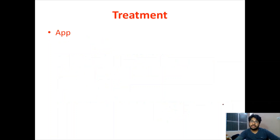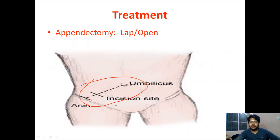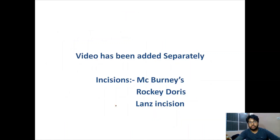Treatment is appendicectomy, which can be laparoscopic or open. The grid-iron incision is at the medial two-thirds and lateral one-third of the line joining the anterior superior iliac spine and umbilicus. Incision options include McBurney's incision, Rocky-Davis incision, and Lanz incision. A video on how appendicectomy is performed has been uploaded previously.